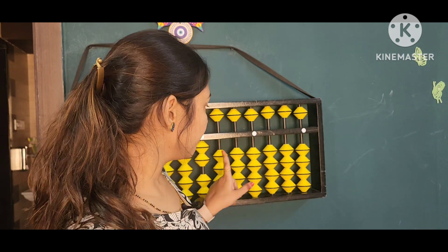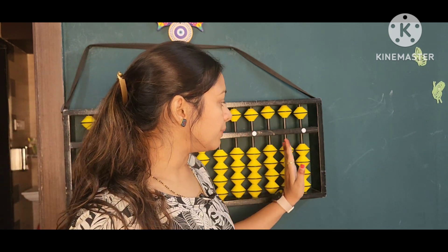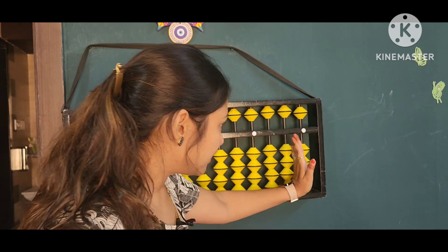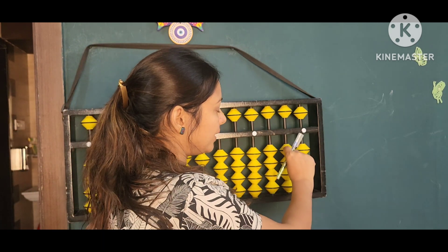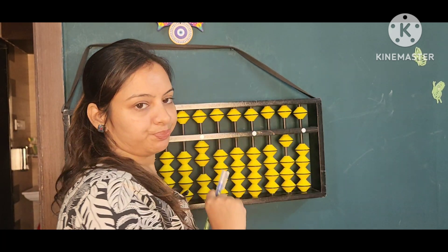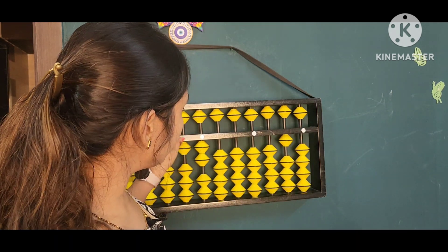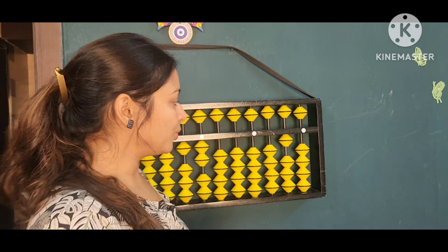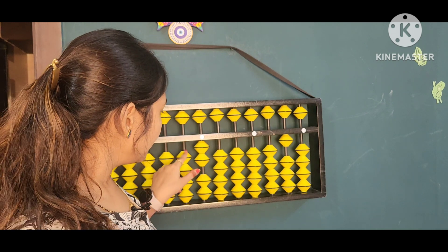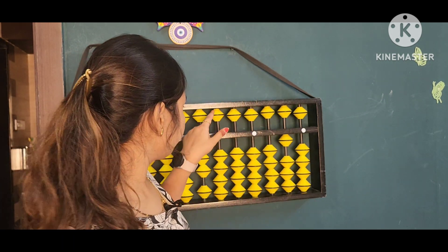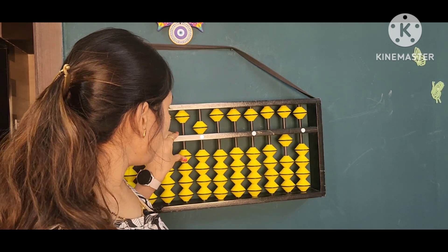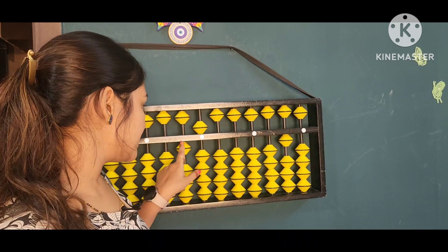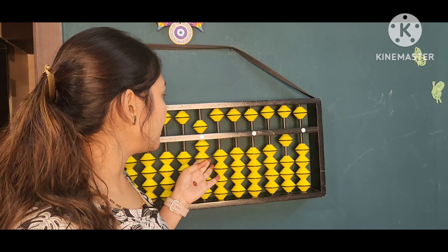Nine ka near ten number is ten only. Jo bhi humne borrow karenge wo hum log right hand side abacus ke right hand side me just for our reference. To humne ten borrow kia. Abhi ten humare paas a gaya hai. To ab hum log isse less nine kar sakte. Less nine ka formula hai less ten add one, now five five, now seven seven means less three add ten, now less eight less ten, less eight means less ten add two.